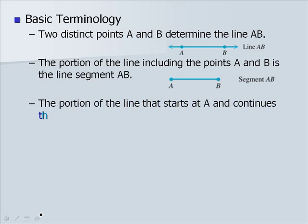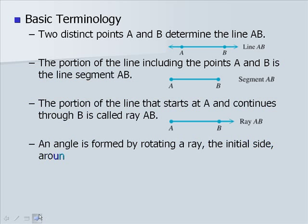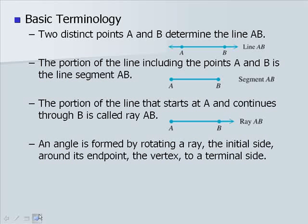The portion of the line that starts at A and continues through B is called Ray AB. An angle is formed by rotating a ray, which we call the initial side, around its endpoint, the vertex, to a terminal side.